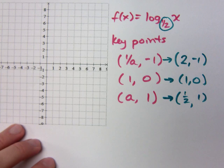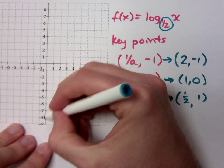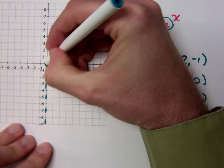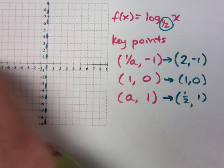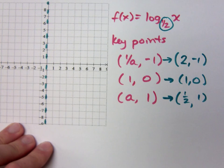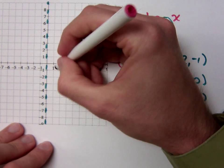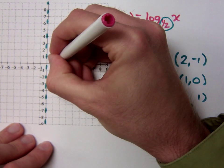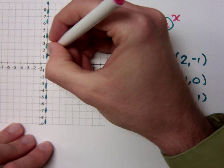Plot these points. Well, I know that I've got my vertical asymptote right here. I've got 2, negative 1. I've got 1, 0, and one-half, 1.